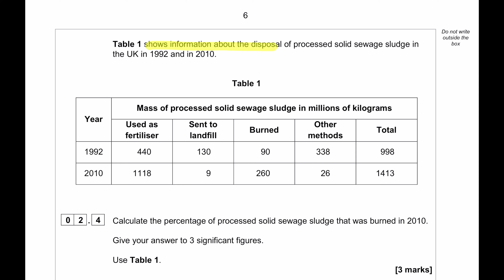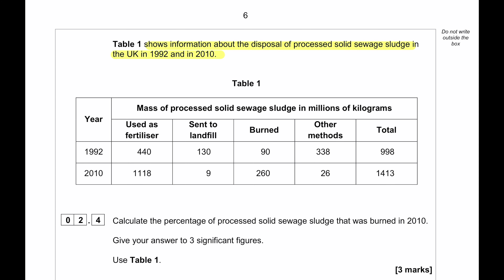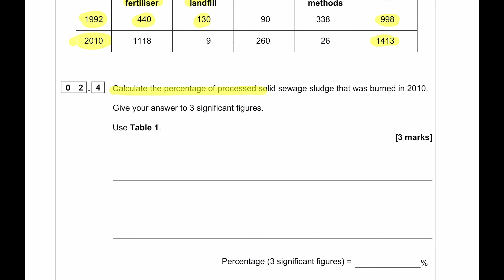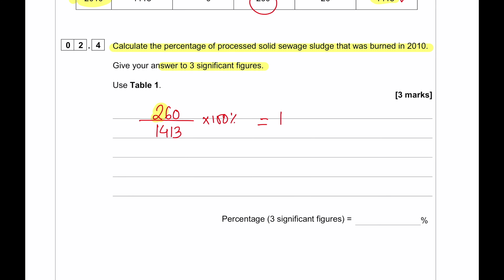Table 1 shows information about the disposal of processed solid sewage sludge in the UK in 1992 and 2010, measured in millions of kilograms. In 1992 the total was 998, and in 2010 it was 1,413. Calculate the percentage burned in 2010: 260 million kg was burned, so 260 divided by 1,413 multiplied by 100 gives 18.4%, expressed to three significant figures.